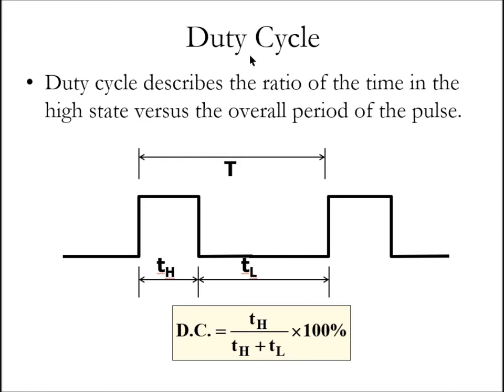Duty cycle refers to what percentage of the total time is the thing on or high. To calculate that, I take the on time, the high time, and divide it by the total time, and I can express that as a percent.